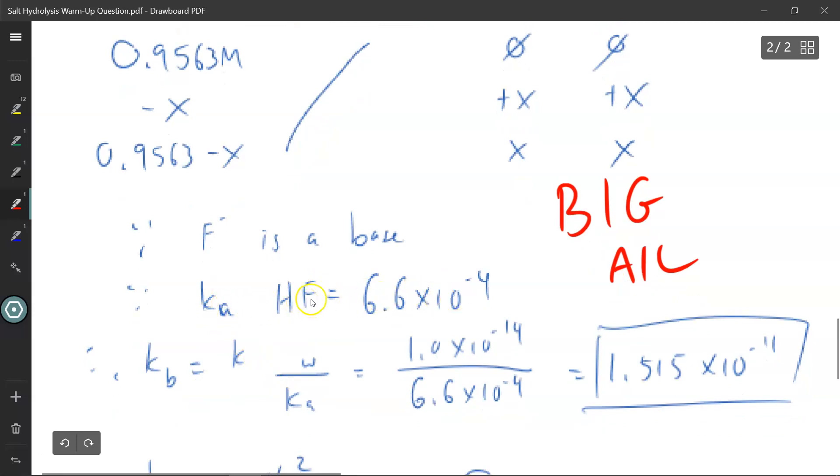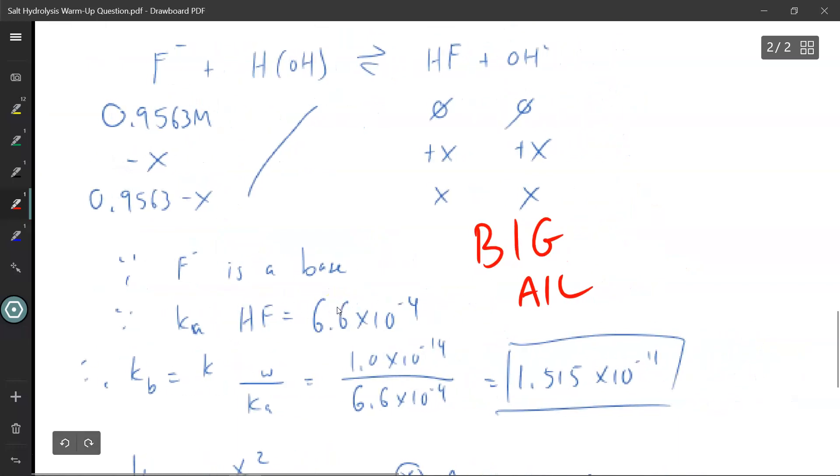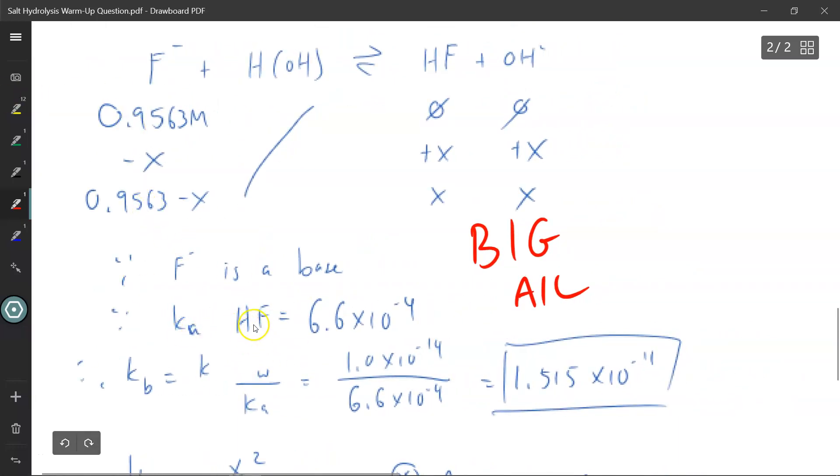So I can't use the Ka value they gave me at the start of the question, at least not directly yet, and that is a common mistake students will make. So what I need to do is convert the Ka value for HF into a Kb value for its conjugate base. So I'm going to use the equation Ka times Kb equals Kw, which can be rearranged into Kb equals Kw divided by Ka. 1 times 10 to power negative 14 divided by 6.6 times 10 to power negative 4, and now I have the Kb value for the conjugate base fluorine, which is 1.515 times 10 to power negative 11.